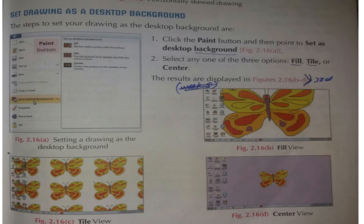After selecting 'Set as desktop background,' there will be 3 options showing in which position or way to display the drawing on screen. The 3 options are: Fill, Tile, and Center. If we select Fill, we will see our drawing on the whole screen. If we select Tile, the drawing will appear in small repeated tiles as shown in figure 2.16c. If we select Center, the drawing will be set in the center at a small size on the desktop.